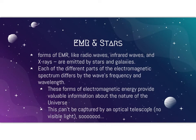Forms of EMR, or electromagnetic radiation, like radio waves, infrared waves, and X-rays are emitted by stars and galaxies. Each of the different parts of the electromagnetic spectrum differs by the wave's frequency and wavelength. These forms of electromagnetic energy provide valuable information about the nature of the universe, but this can't be captured by an optical telescope.